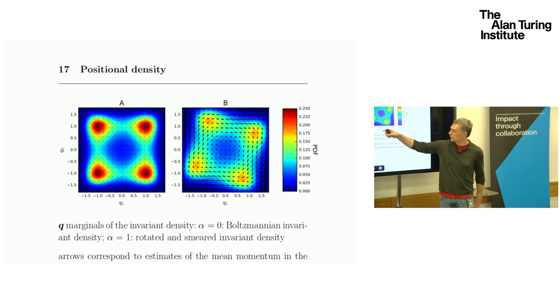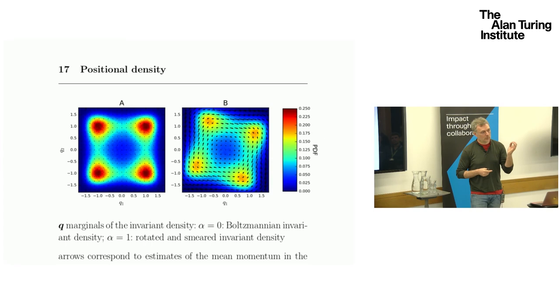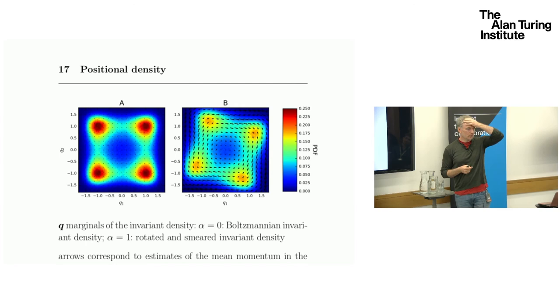We both turn clockwise somewhat and then smear out the distribution. The wells are not as deep, as you can see. And here you have an estimate of the momenta for the stationary momenta. You see also that the particles are moving for a long time along this kind of clock.